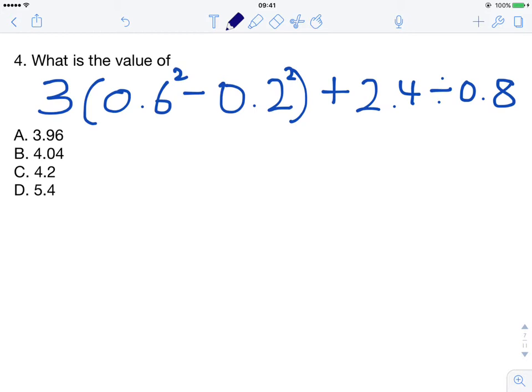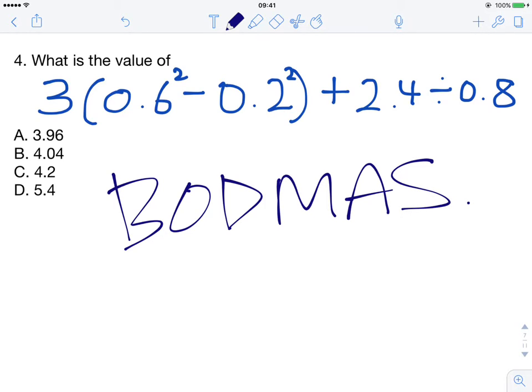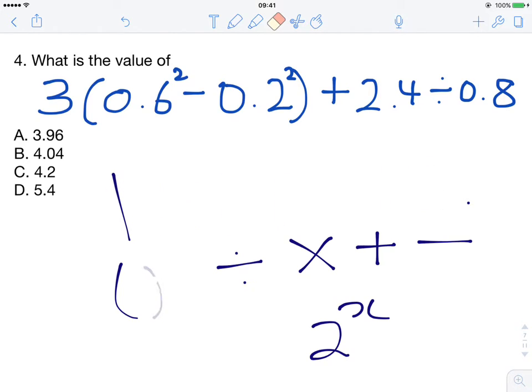So recall BODMAS. This tells us the order in which we perform certain operations. So brackets first, then division, then multiplication, then addition, then subtraction. And of course exponentiation takes precedence over all these other ones. So with that knowledge let's start.